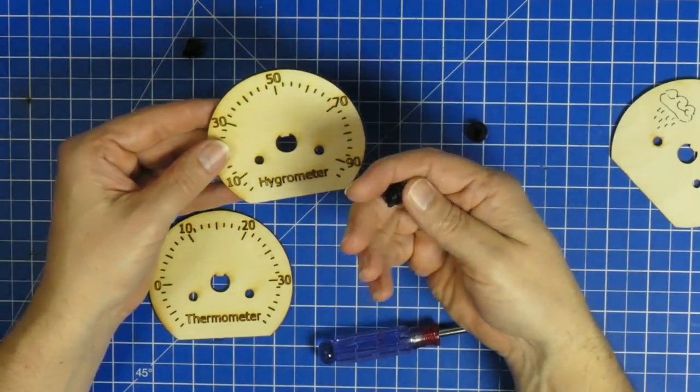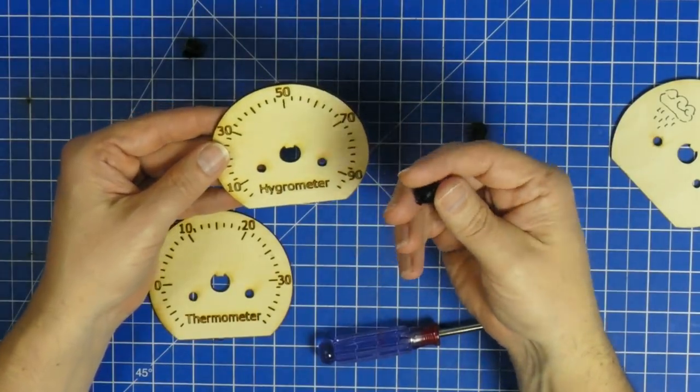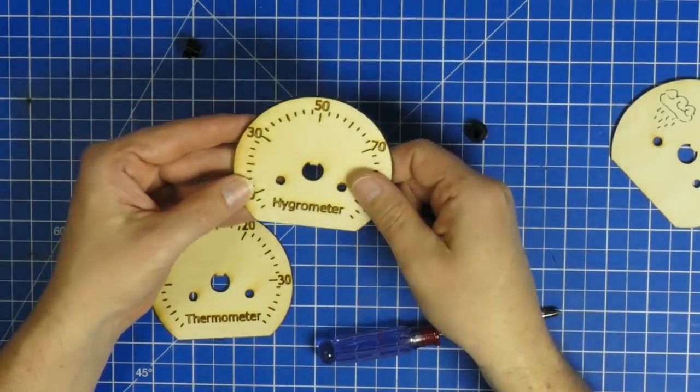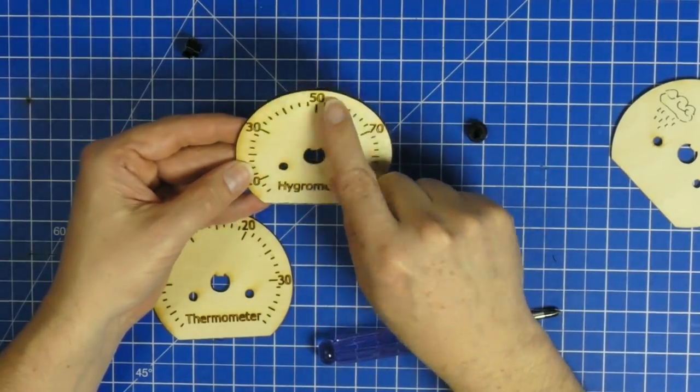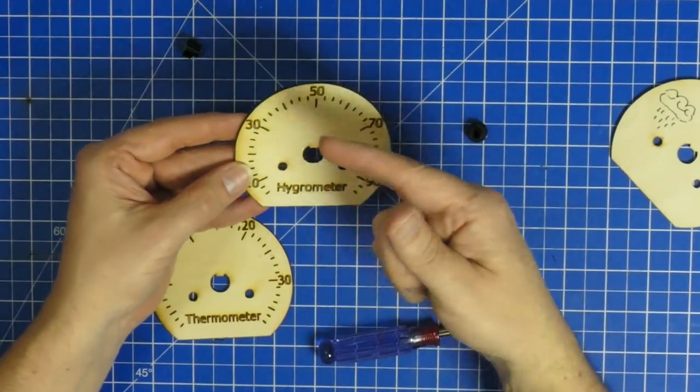And because these steppers have very little force they're just going to stall out, they're not going to wear out the notch or cause any damage to anything and they're just going to stay there and then you move to the position that you want your dial to be pointing to.